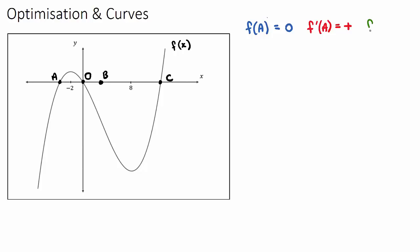What is f''(A), the second derivative? The second derivative relates to the concavity. Where our point is at A, is that part of a negative or a positive or a zero concavity? Well, it's part of this curve here, and if it's curving down, it's a negative concavity. So we're going to get some negative value for the concavity at A. If we understand the difference between f, f', and f'', we can really understand these problem-solving questions.